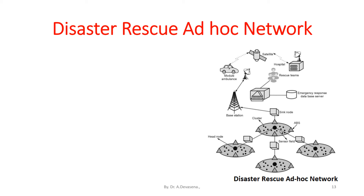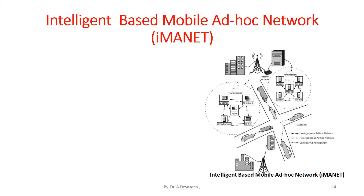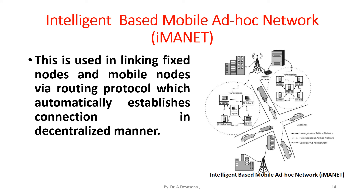Ad hoc networks are important when disaster strikes and established communication hardware is not functioning properly. Intelligent-based mobile ad hoc network (IMANET) is used in linking fixed nodes and mobile nodes via a routing protocol which automatically establishes connections in a decentralized manner.